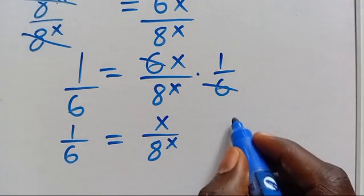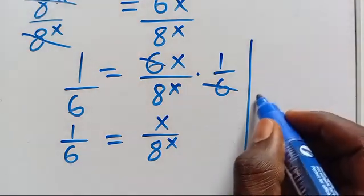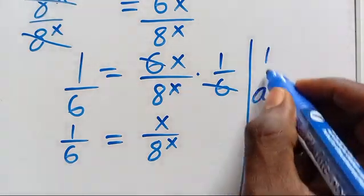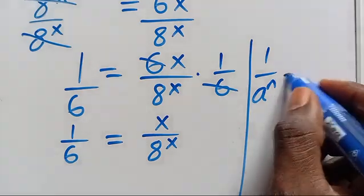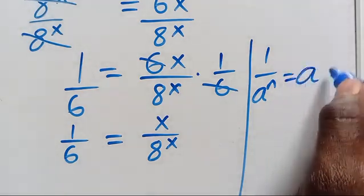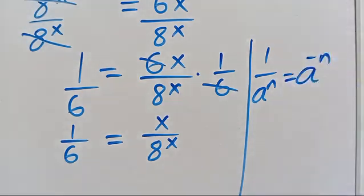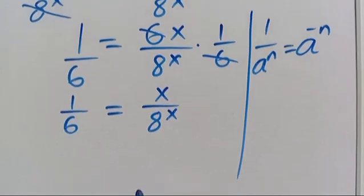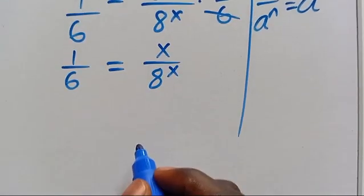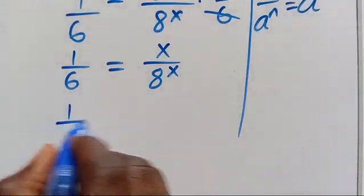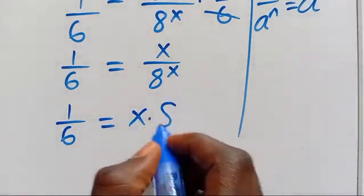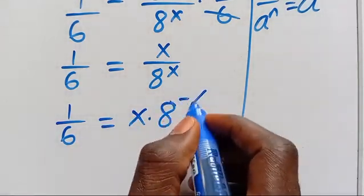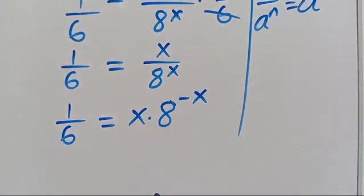But mind you that when we have 1 divided by 8 to the power of n, this equals 8 to the power of minus n. So let's apply it to this one. We are going to have 1 divided by 6 equals x multiplied by 8 to the power of minus x.